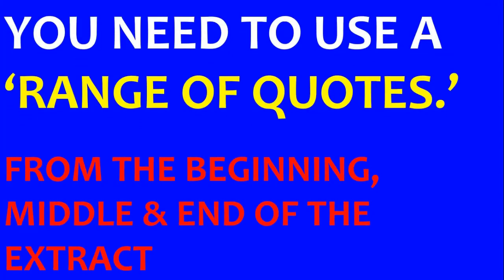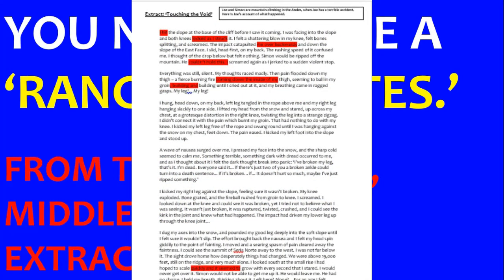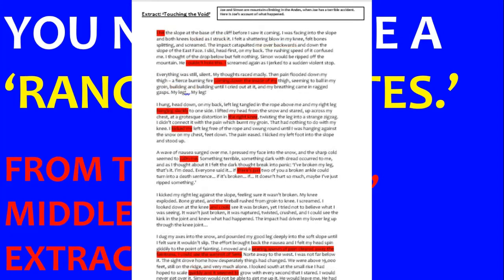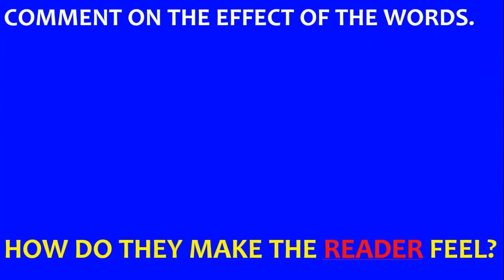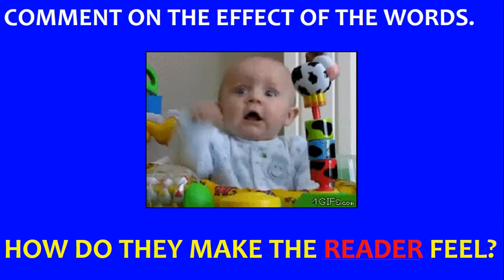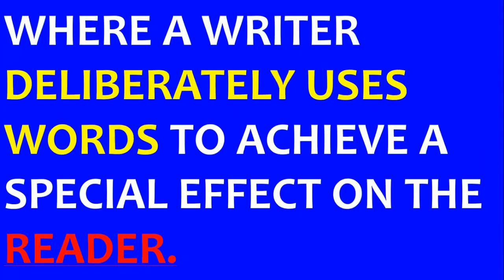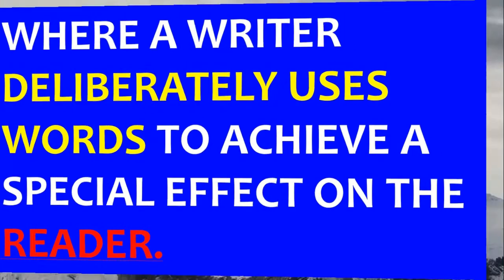You need to use a range of quotes and track through the text with extensive coverage — using quotes from the beginning, middle, and end. If you only quote from the start, you won't get a high mark. Tracking all the way through shows you can talk about the development of the text. Comment on the effect of words and how they make the reader feel. The writer has chosen these words for a reason — it might make the reader feel scared, happy, or excited — and you need to explain why.